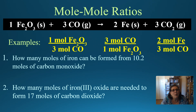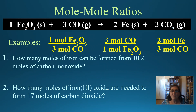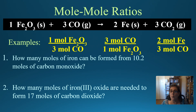We can answer questions like number one: how many moles of iron can be formed if we have 10.2 moles of carbon monoxide? Notice this question involves two chemicals and we have a balanced reaction — that's how you know it's stoichiometry. You have two chemicals in the question, not one but two, and you have to have a balanced reaction to go with it. In number one, we have iron (Fe solid) and carbon monoxide (CO, not CO2). Those are the two chemicals we're going to focus on; the other two chemicals are not in this problem.